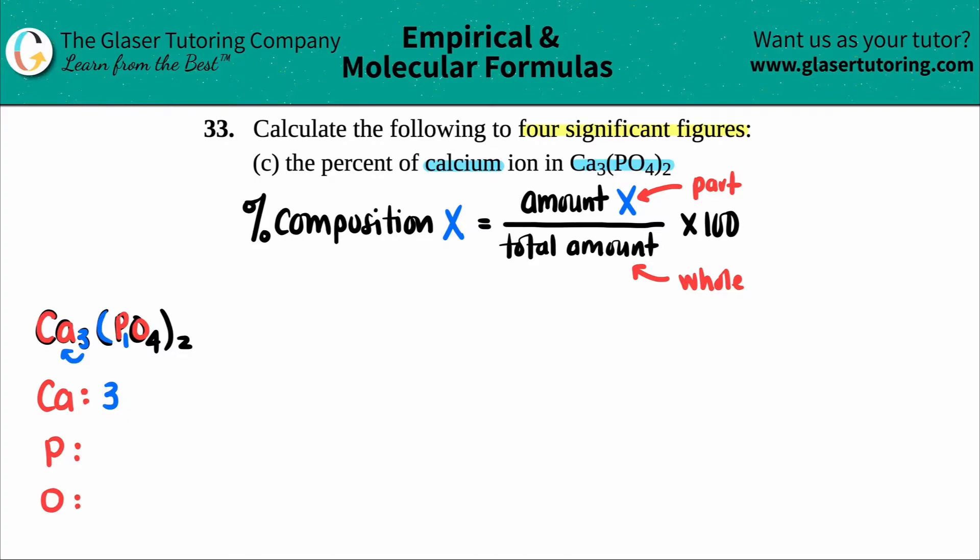But remember anything in parentheses, that number outside has to get multiplied. And you got to be fair. You got to do it for both of them. So for phosphorus, it's 1 times 2. So there's really 2 phosphorus in the compound. And then for oxygen, there was a 4 here, but 4 times 2 is 8.